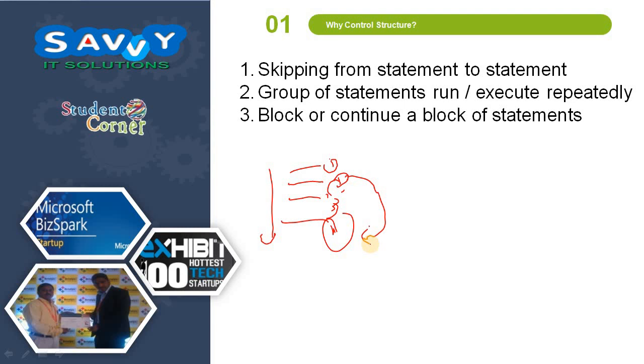The next one is a group of statements running repeatedly or executing repeatedly. These three statements run repeatedly until a condition is satisfied. This is the main core concept. Otherwise, how would we do it? We would need to run these three statements repeatedly.